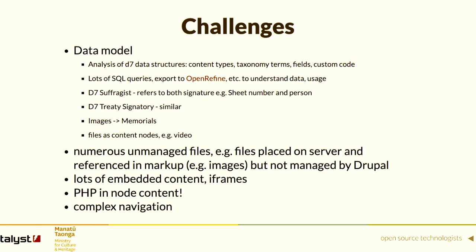There were some data model challenges. For example, there was a Drupal 7 content type called suffragist that was referring both to a signature on a petition sheet and to a biography about the person — so that node was doing a lot of work. Similarly with treaty signatories: there was information about which sheet of the Treaty of Waitangi they signed and on what date, but also a biography, their whānau, and their whakapapa.